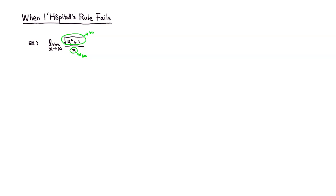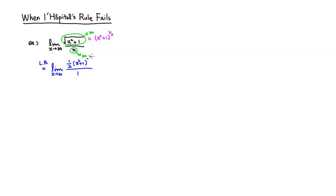So let's blindly apply L'Hopital's rule. By L'Hopital's rule, you have the limit as x approaches infinity. The derivative of the bottom is 1. For the derivative of the top, rewrite it as x squared plus 1 to the 1/2 power. The derivative is 1/2, keep the x squared plus 1, subtract 1 from the power giving negative 1/2, and then by the chain rule multiply by the derivative of the inside, which is 2x.